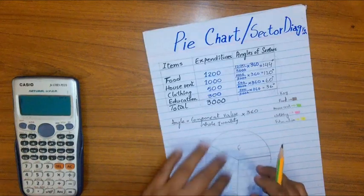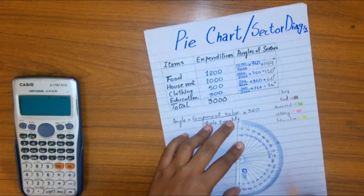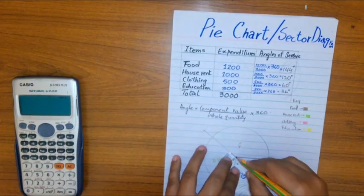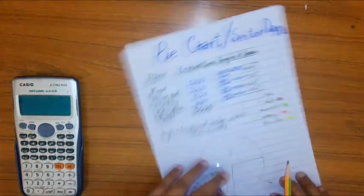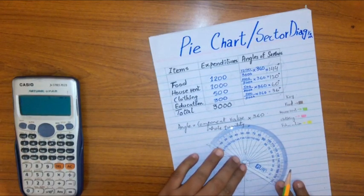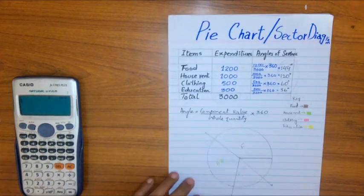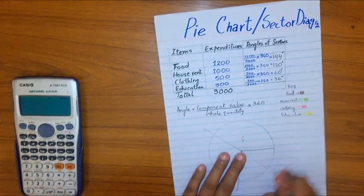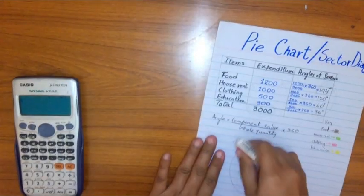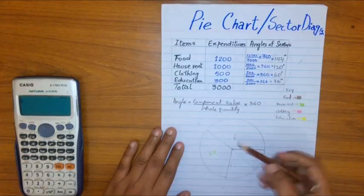Now for the third angle we will start drawing from here which is of 60 degrees. This area must be equals to 36 degrees which is for education. Now remove the excess part. Here I have made a key to show all these components with different colors so a layman can understand easily.